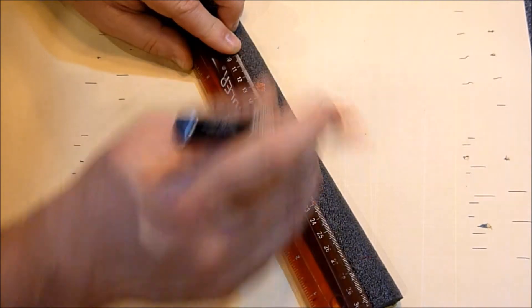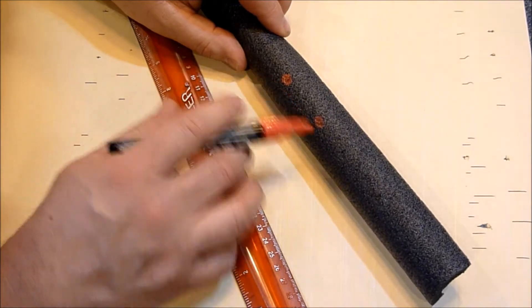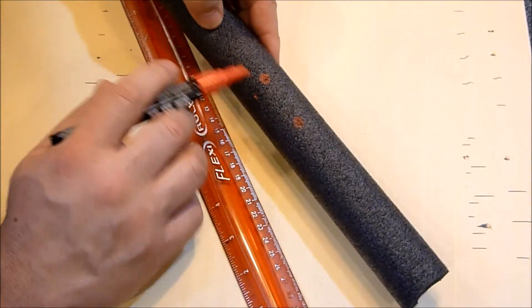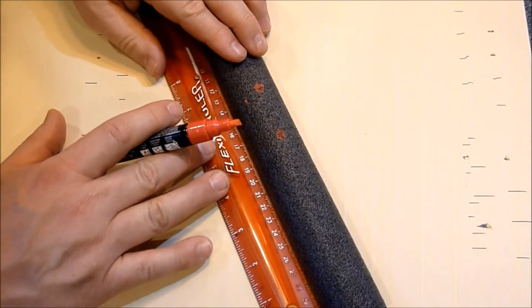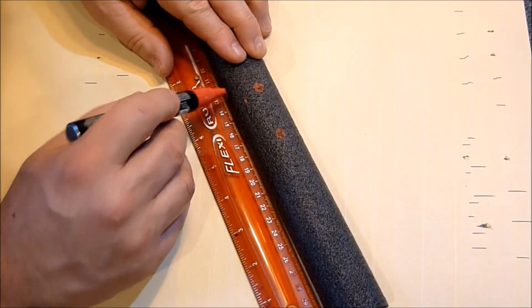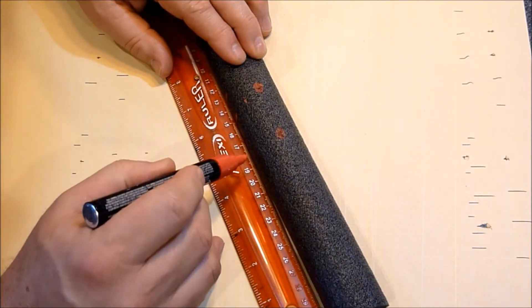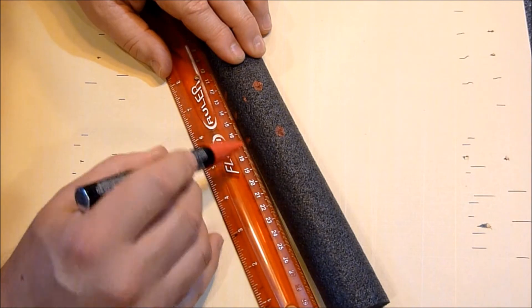Then I'm going to line up down below and make a mark one centimeter on either side of the upper mark. And the same thing over here—one centimeter on either side of the mark.